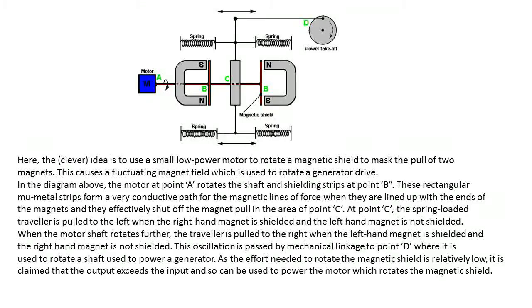As the effort needed to rotate the magnetic shield is relatively low, it is claimed that the output exceeds the input and so can be used to power the motor which rotates the magnetic shield.